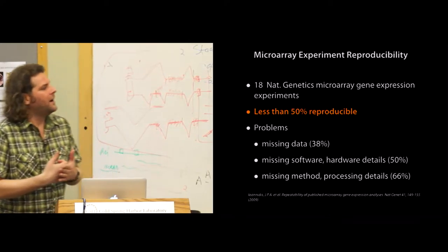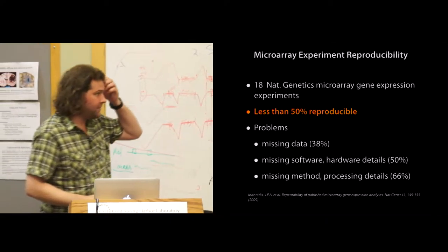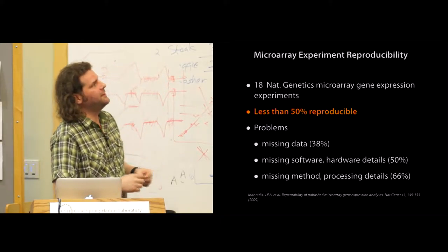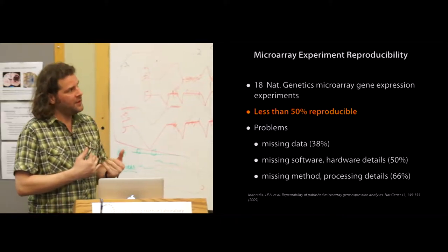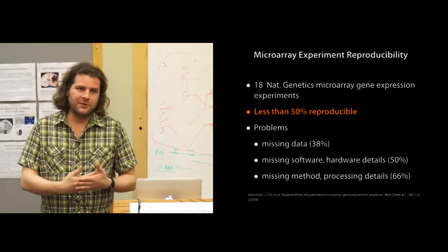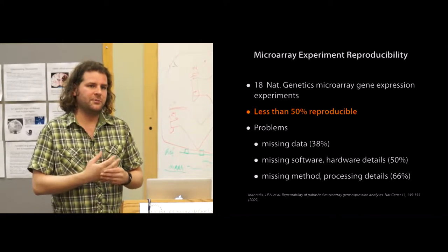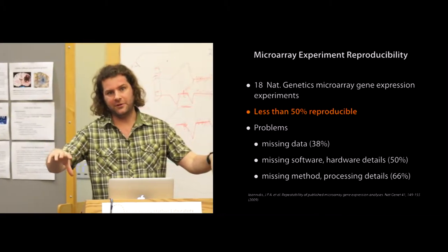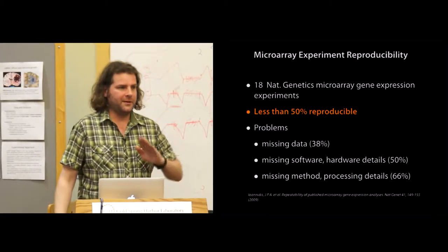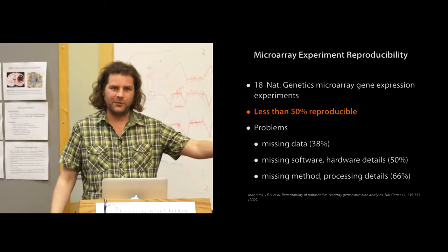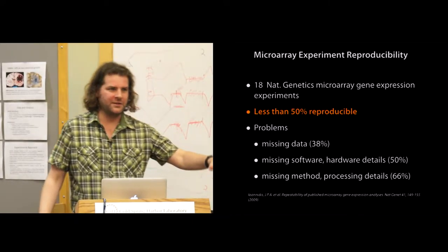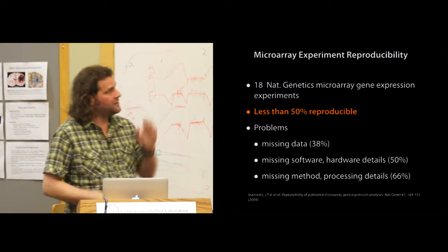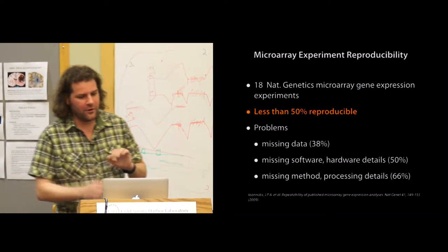Looking at microarray studies — 18 experiments in Nature Genetics — less than 50% could be reproduced. The criterion for reproducibility is: given the data provided, can I reproduce a figure from the paper? We're not re-doing the experiment; we're taking the same raw data and asking, can I get a figure that was in that paper? More than 50% of the time the answer was no.